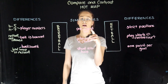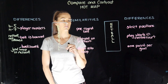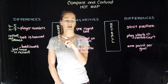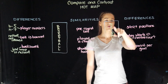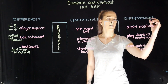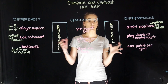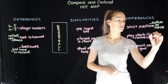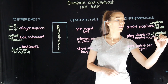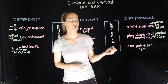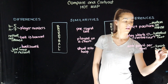The similarities: it's one round ball — that's the same in both, the size is a little bit different but that's a similarity. It's played on a court — both are played on a court, therefore it is a similarity. And you shoot into a hoop. Strict positions are different in netball because the positions are restricted in terms of where they can move. Play starts in centre court in netball, whereas in basketball it's at the backcourt. And it's one point per goal in netball, whereas in basketball it's two points, and three pointers.